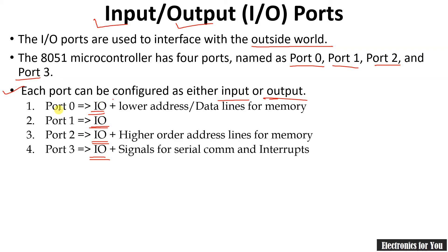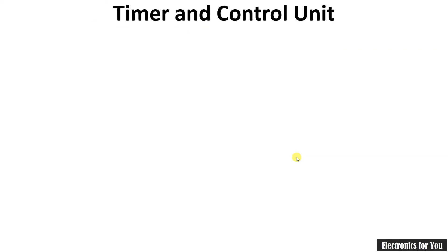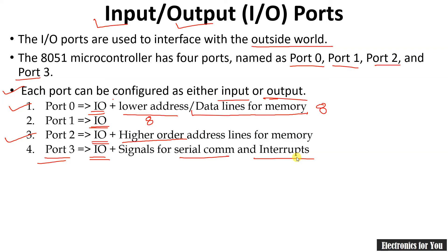Some ports also have alternate functions. Port 0 can work as lower-order address lines as well as data lines — since they are 8-bit, there are 8 data lines or 8 lower-order address lines. The total address lines are 16, so the higher-order address lines are provided by port 2. Thus port 0 and port 2 are used when external memory is connected. Port 3 has many alternate functions used in serial communication, interrupts, and for reading or writing to input/output devices and memory.